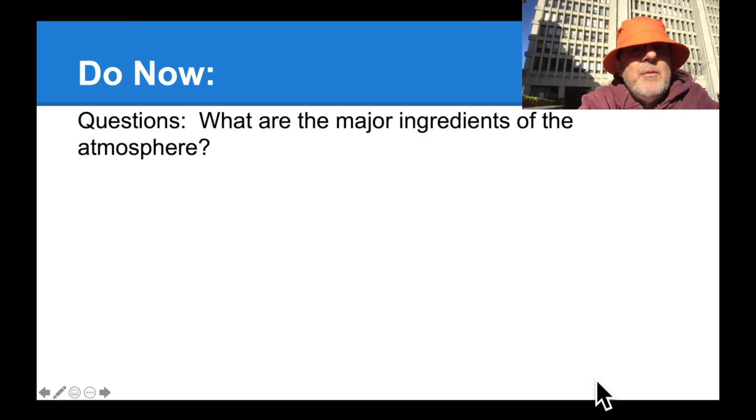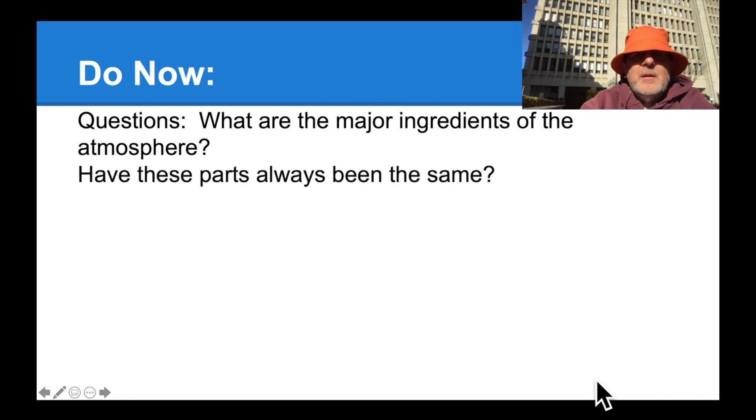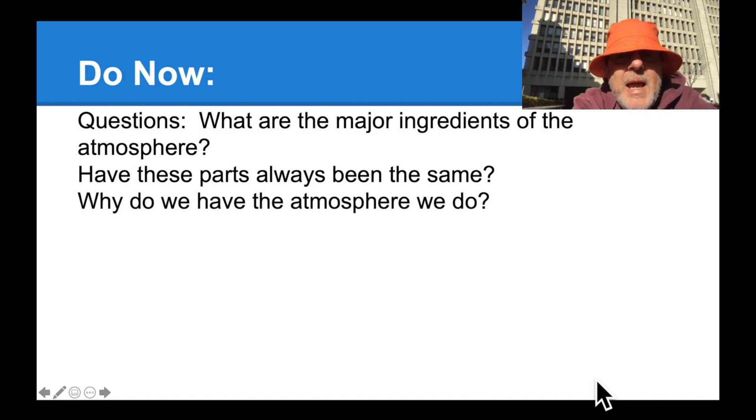So if you were at home right now, I would say, and I'll say, to do what I'm going to ask. What are the major ingredients of the atmosphere? You might want to try to jot them down or just wait about a second and we'll go through them. Have these parts always been the same? So have the ingredients of the current atmosphere always been the same? Why do we have the atmosphere that we do? Is it pre-ordained that we should have a 21% oxygen, 78% nitrogen atmosphere with 1% of other gases? Is that set in stone or are there reasons for the atmosphere that we do have?